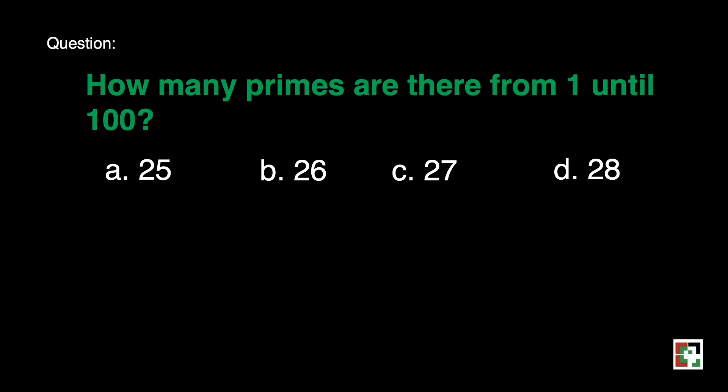I already discussed this one a while ago. We have a total of 25 prime numbers from 1 until 100. So the answer here is letter a.